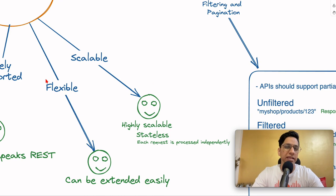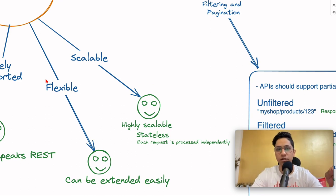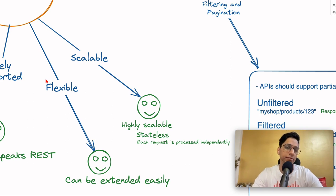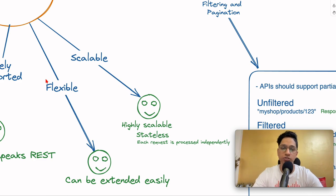REST is highly scalable, mainly because it is stateless — it is meant to be stateless. Each request you make to your REST API is not dependent on any of the previous requests, ideally. That's how REST should be implemented: each request is processed independently, which means you can scale individual requests horizontally.